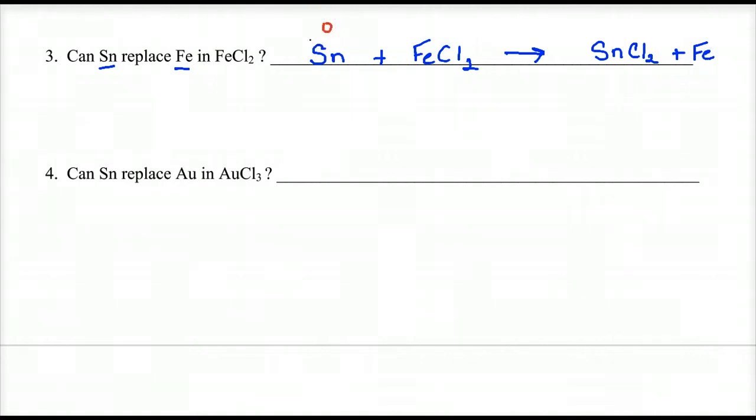Stand-alone metals get a zero, so tin is zero. Chlorine is a halogen, it's going to be negative one. It needs one more electron to become stable. There's two of them, so negative two overall. This thing has to be zero because there was no charge written, so iron, because it's one, has to be plus two to make that zero.